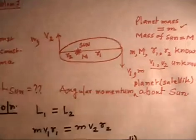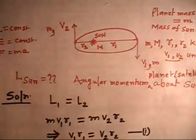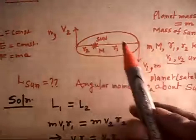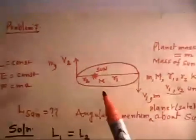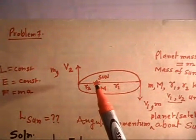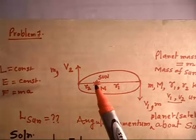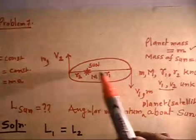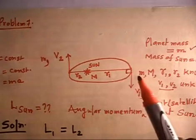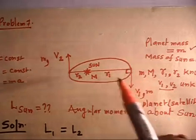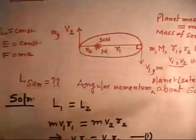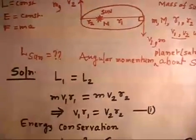Now let me work through it. Angular momentum must be found at the two orbital points. Since only internal forces act and these forces pass through the Sun, there is no torque about the Sun, so angular momentum is conserved. At the farthest point, r1 is perpendicular to v1, so angular momentum is M·r1·v1. At the nearest point it is M·r2·v2. Setting them equal: M·r1·v1 = M·r2·v2 — this is equation 1.